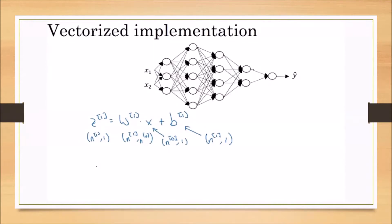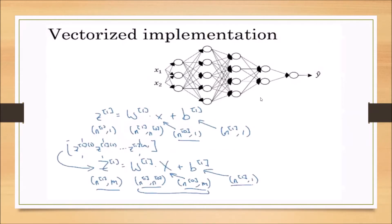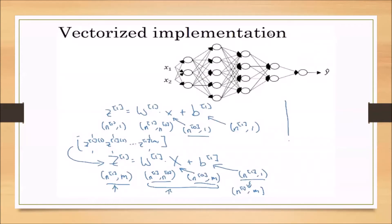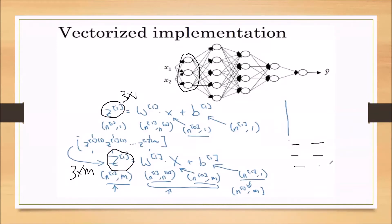We are discussing the vectorized implementation for the deep neural network. First we considered a single training sample, and now we are proceeding to m training samples. The lowercase x is replaced with capital X. Z1 gives the activation units Z-value of the first layer: for a single training sample the Z1 matrix size is 3×1, but for m training samples it is 3×m — consisting of m columns, one per training sample.